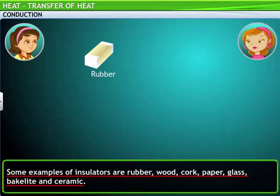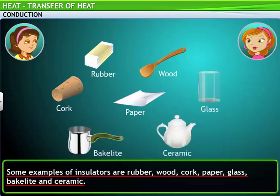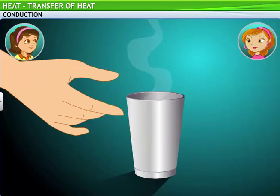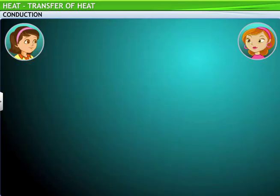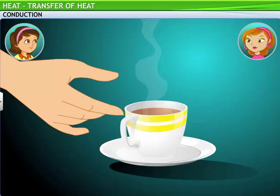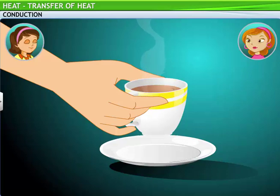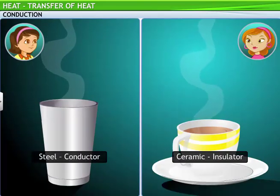Rubber, wood, cork, paper, glass, bakelite, and ceramic are some examples of insulators of heat. Try holding this tumbler with tea in it. Feels hot, doesn't it? It's difficult to hold. I'll pour the tea in a ceramic cup. It's easier to hold now, right? You're right. Is it because ceramic is an insulator? Correct. It is because steel is a conductor and ceramic is an insulator of heat.